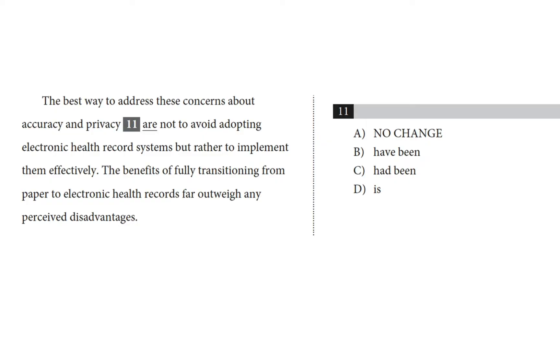So, what is the subject? The best way to address the concerns about accuracy and privacy are not to... Okay. Are is our main verb. And this prepositional phrase, to address the concerns about accuracy and privacy, is in the way. It modifies way. The best way to do this are not to do this but rather to do that. And simplifying the sentence that way reveals that our subject is way, and our main verb is are. The best way are. And that's weird. Way is singular, and we want the singular form of a verb. So, is not are. Right? So that means D is probably our answer.